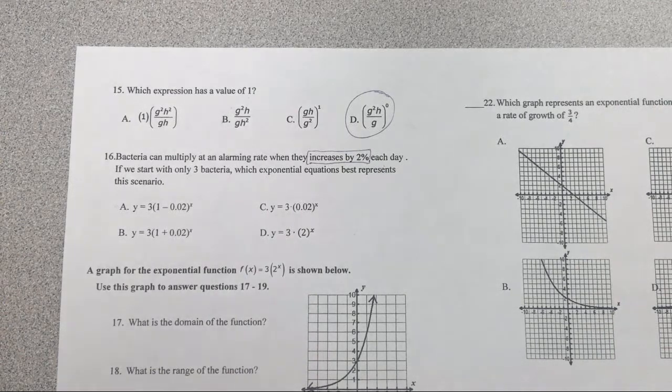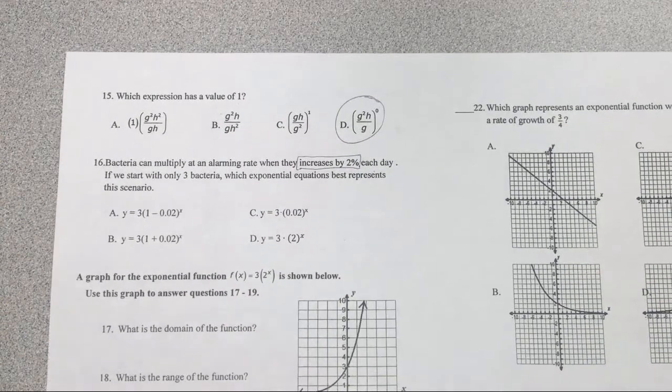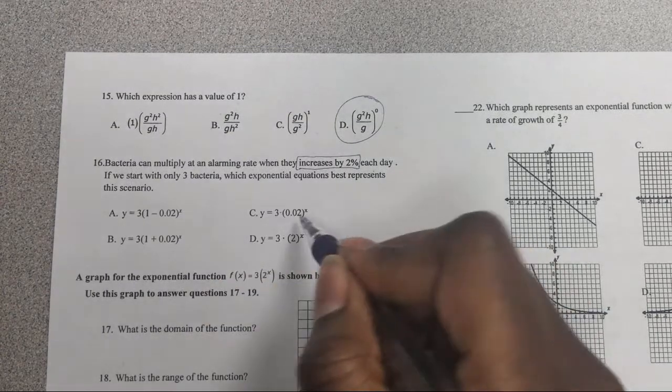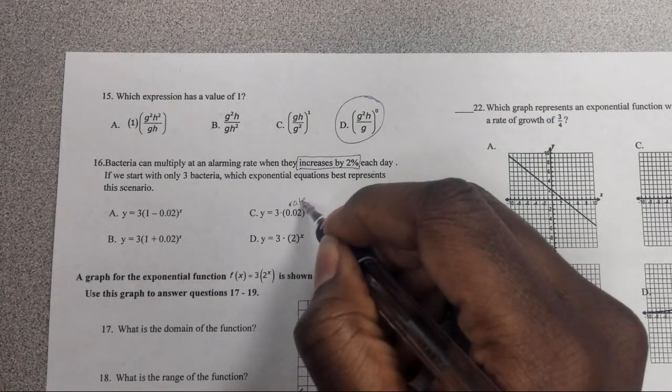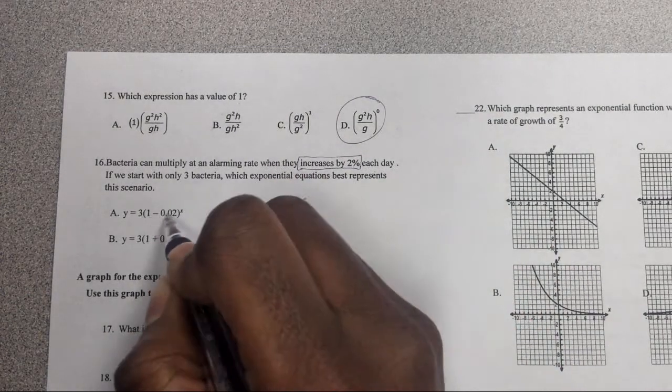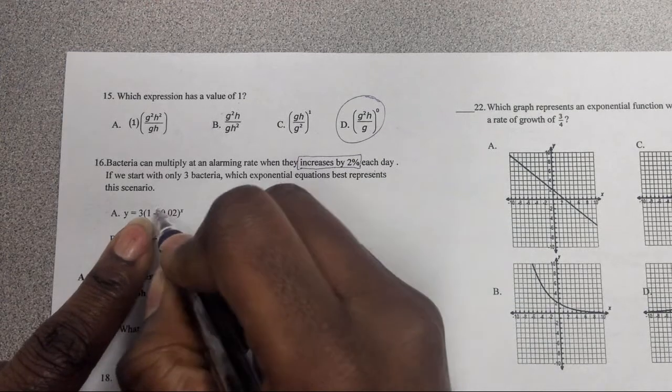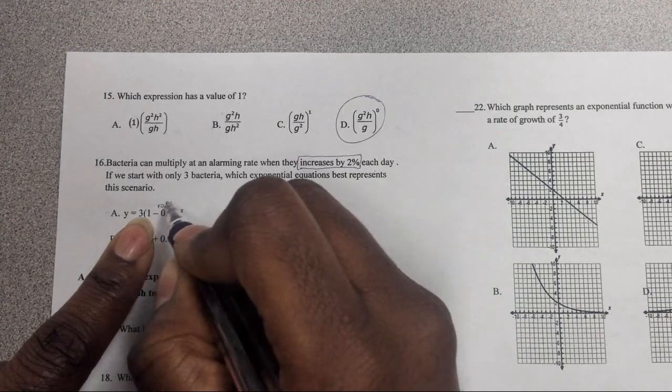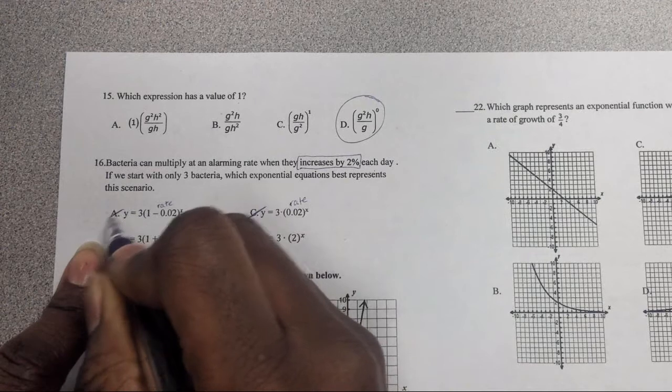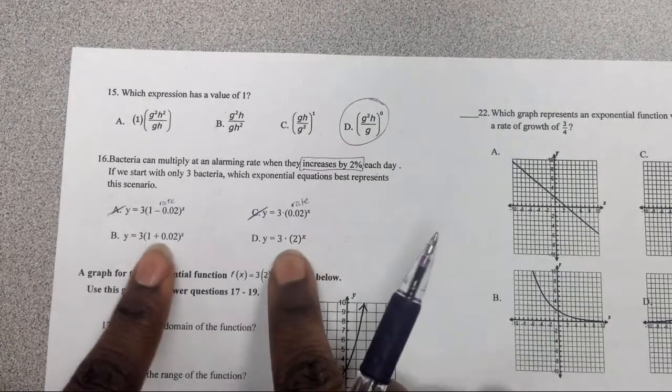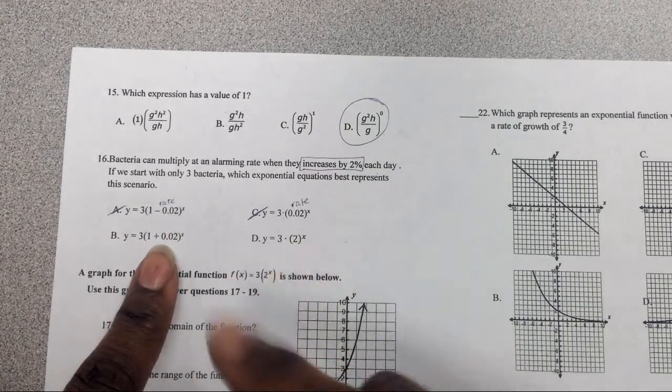You should be able to eliminate this rate right here. Is that greater than one? No. This rate right here is saying 1 minus something. Is that rate going to be greater than one if you did that math? No. So these are the only two where the rate is greater than one.